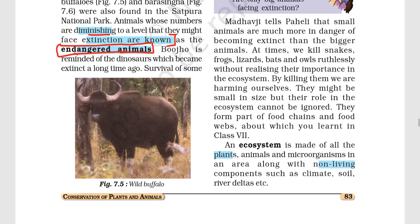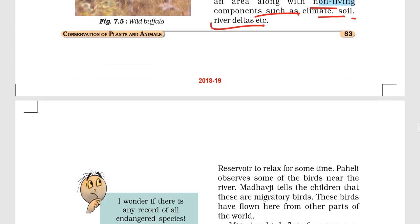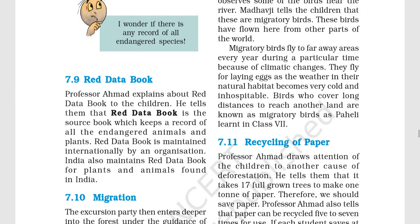Ecosystem refers to the relationship between plants, animals, microorganisms, and non-living components like climate, soil, rivers, and deltas. The Red Data Book is the source book which keeps a record of all endangered animals and plants in the world. All of them are compiled and given data in this book. It is maintained both internationally and by the government.